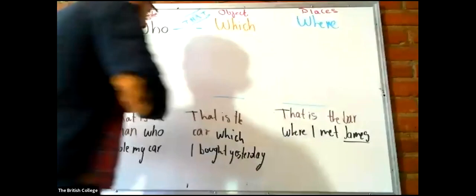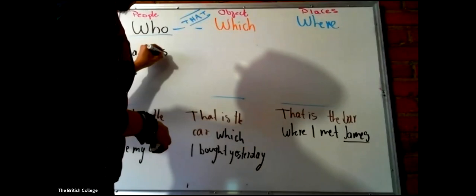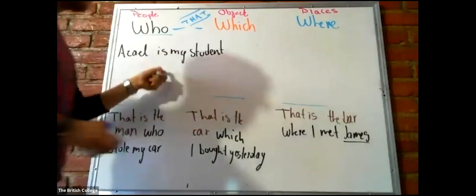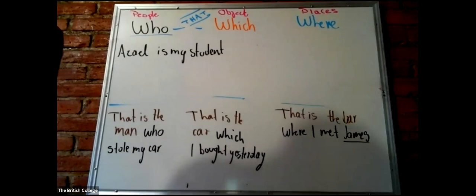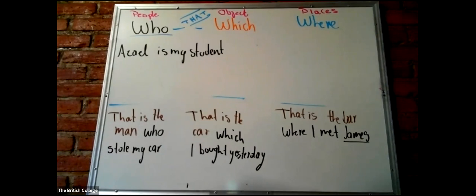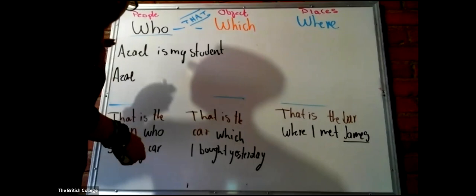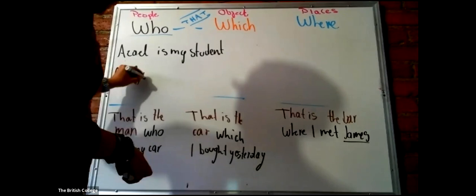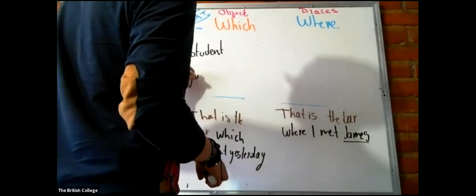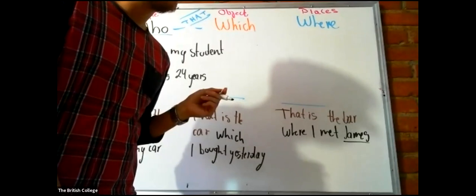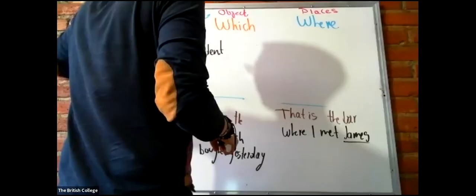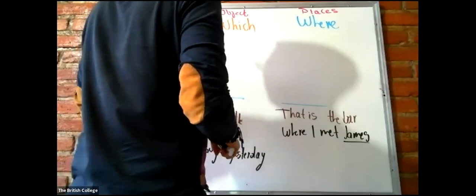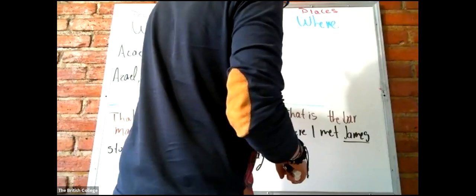Ahí están, chicos. Estas son mis cláusulas. Who, which, and where. Now, supongamos que yo quiero dar información extra de alguien, algo o algún lugar, pero que no es relevante. ¿A qué me refiero? Yo puedo decir, Asael is my student. Eso es lo importante, eso es lo relevante, chicos. Yo voy a dar información extra. ¿Cómo lo hago? Sencillo. Asael, who is 25 years old, is my student.